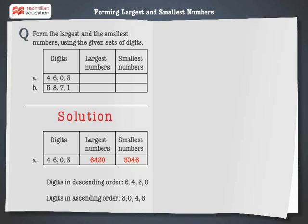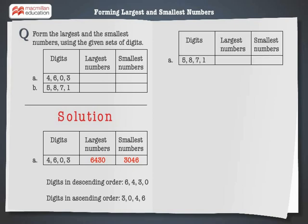Let's solve the next problem. Here we have the digits 5, 8, 7 and 1. To form the largest number, first arrange the given digits in descending order, that is 8, 7, 5 and 1. Hence the largest number that can be formed using the digits 5, 8, 7 and 1 is 8751.